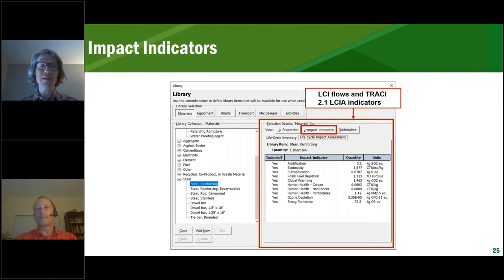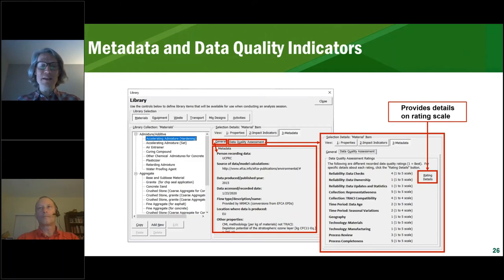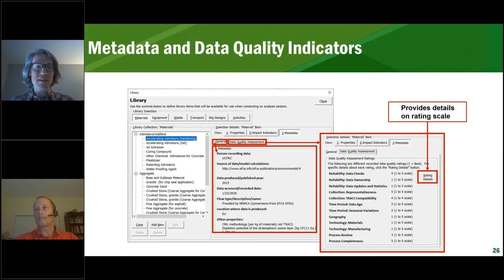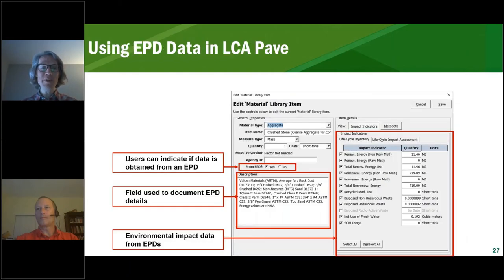For every material there is a detail section with properties, impact indicators, and metadata. The impact indicators use TRACI and different flow categories like energy, waste, and water. The metadata is fully integrated in the tool — on the right you see the different topics from the table, with the one-to-five scale for rating data quality. In the middle of the screen there is generic metadata: who recorded the data, the public source — everything is traceable and transparent. Not every data point in the database is of equal quality, so we made sure EPDs can be used within the tool. When you add a new material you can select whether it is an EPD or not, and there's an input screen for the actual impact indicators where you can log values for different impact categories.